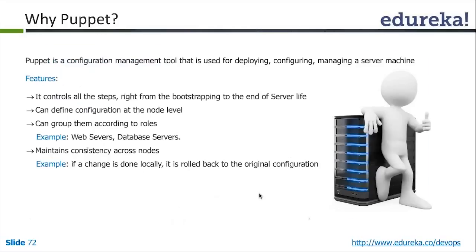Puppet is a configuration management tool used to deploy, configure, and manage server machines. Can Puppet deploy virtual machines? Yes. But can it do bare-metal imaging like PXE boot? It cannot. For Puppet to work, once you install the OS, you have to install the Puppet agent. Only when the Puppet agent is installed is this tool ready for configuration.